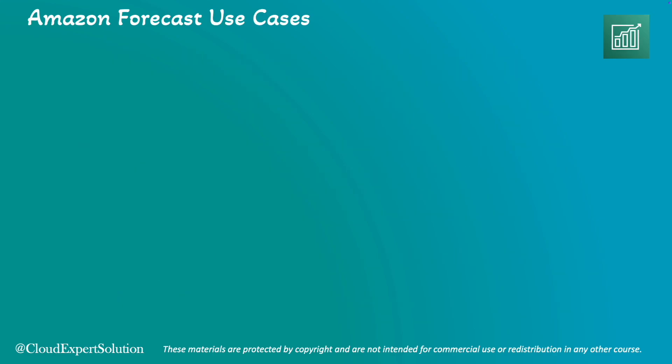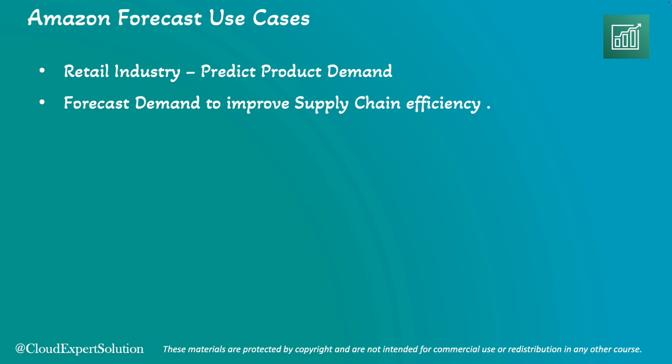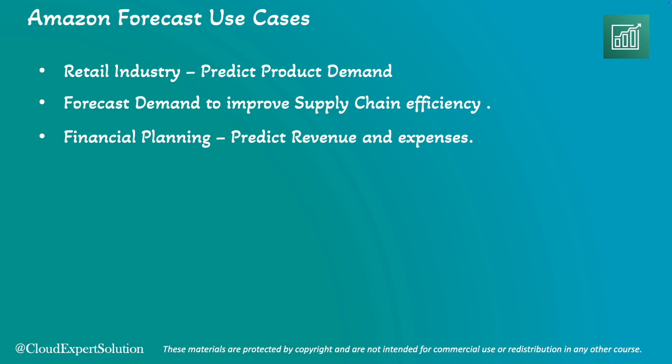In terms of Amazon Forecast use cases, in retail you can predict product demand to optimize inventory levels and reduce stockouts. For supply chain management, you can predict demand to improve efficiency and reduce costs. For financial planning, you can predict revenues, expenses, stock prices, market prices, inflation, and other financial parameters. You can also forecast staffing needs to ensure adequate workforce levels during peak times. The possibilities are limitless.